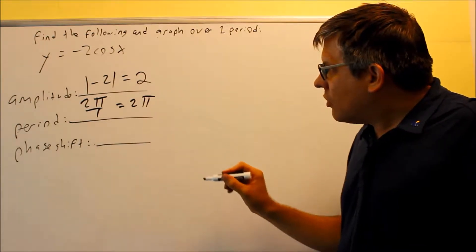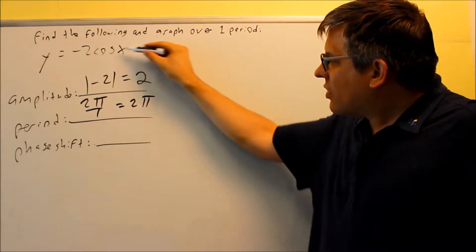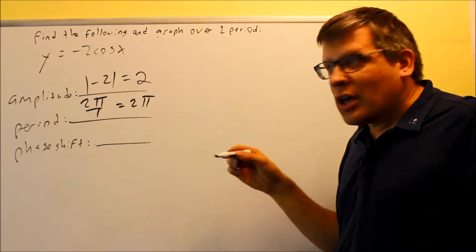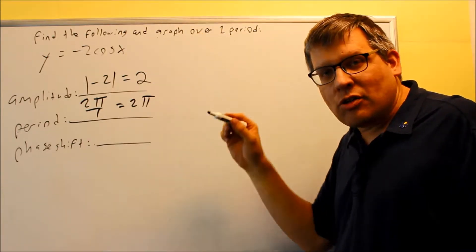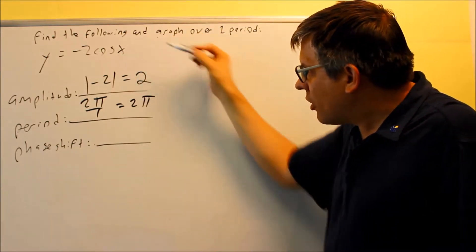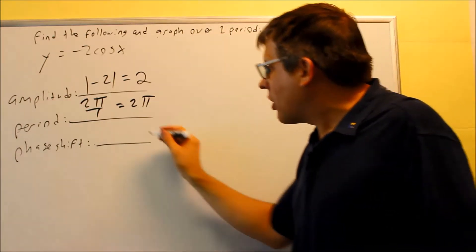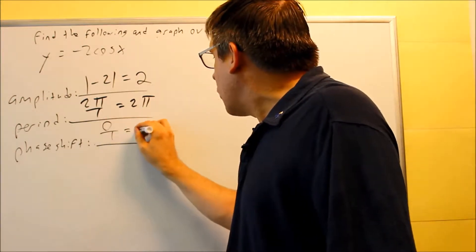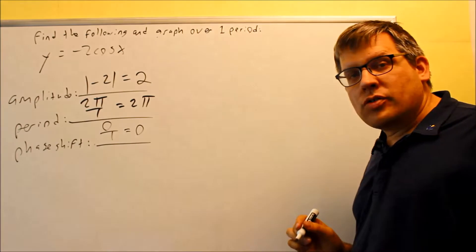My phase shift would be the c value divided by the number in front of the x. The number in front of the x is 1, but my c value again here is 0 because I don't have any number that comes after the x. So because of that, my phase shift once again is going to be 0.